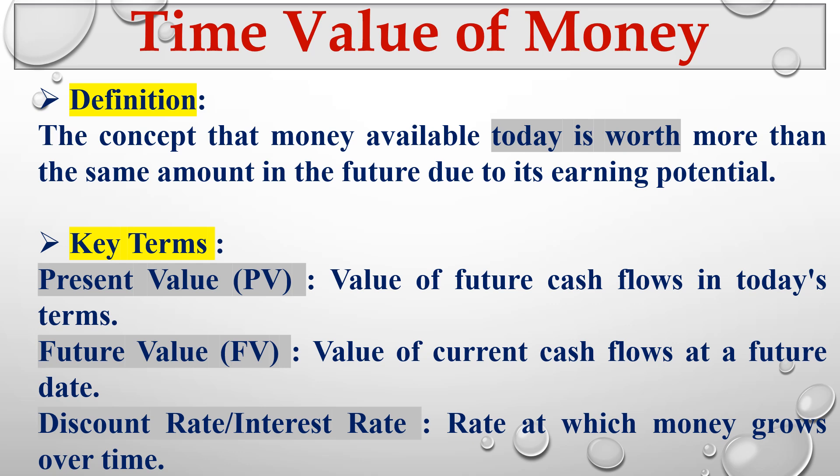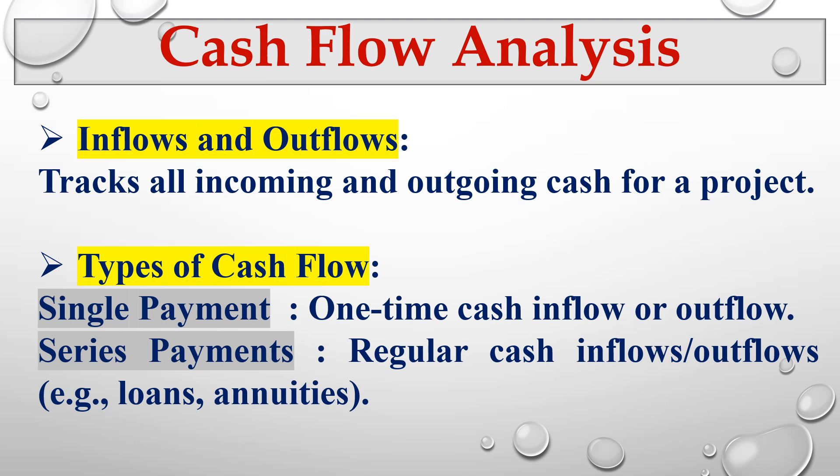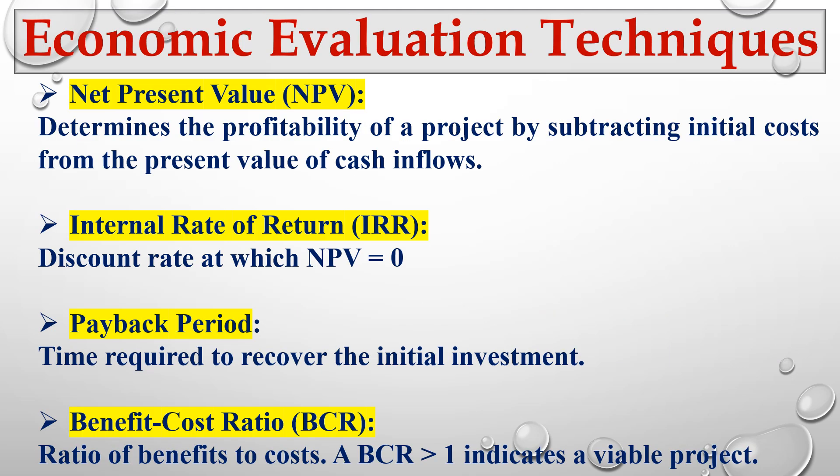The next principle is cash flow analysis. We have cash inflows — cash coming into the company — and cash outflows — cash going out of the company. There are two types of cash flows: single payments, which are one-time cash flows, and series of payments, which are regular cash flows typical of large two-to-three year projects paid as work is completed.